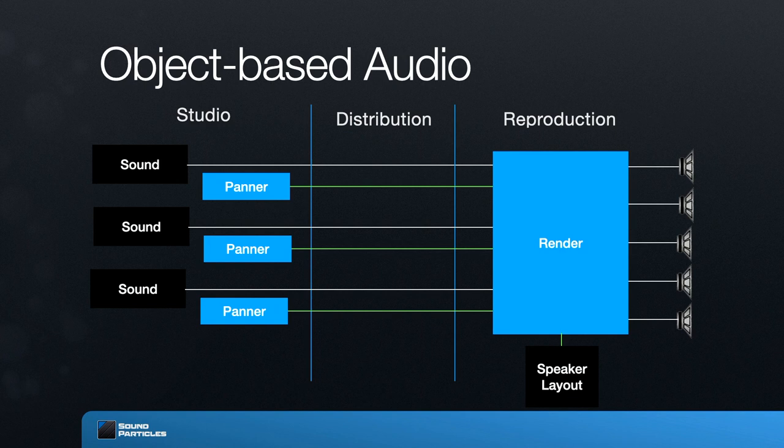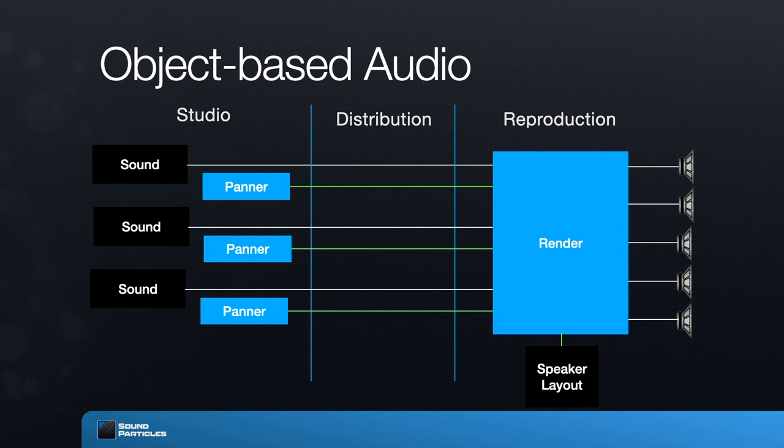With object-based audio, what we do is completely different. You're going to have all of these original audio materials, all of these sounds, but we are not going to mix them. You're going to keep them completely independent without mixing any of those. We're going to distribute each one of those sounds completely independent from each other. Now the panner — when you use it and say you want the sound in a certain direction — the panner will not change the sound or distribute it over the channels. It's going to take note of your intention.